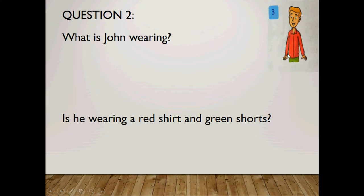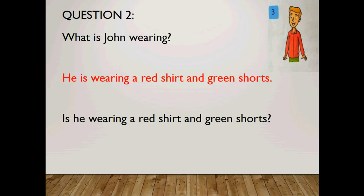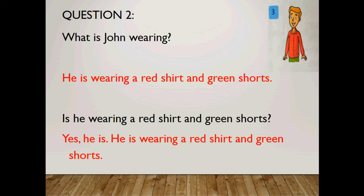Let's look at question two — a picture of John wearing a red shirt and green shorts. What is John wearing? The answer is: he is wearing a red shirt and green shorts. Shirt — only one, so 'a red shirt.' Shorts — plural, no need for 'a.' Yes/no question: Is he wearing a red shirt and green shorts? Yes, he is. He is wearing a red shirt and green shorts.